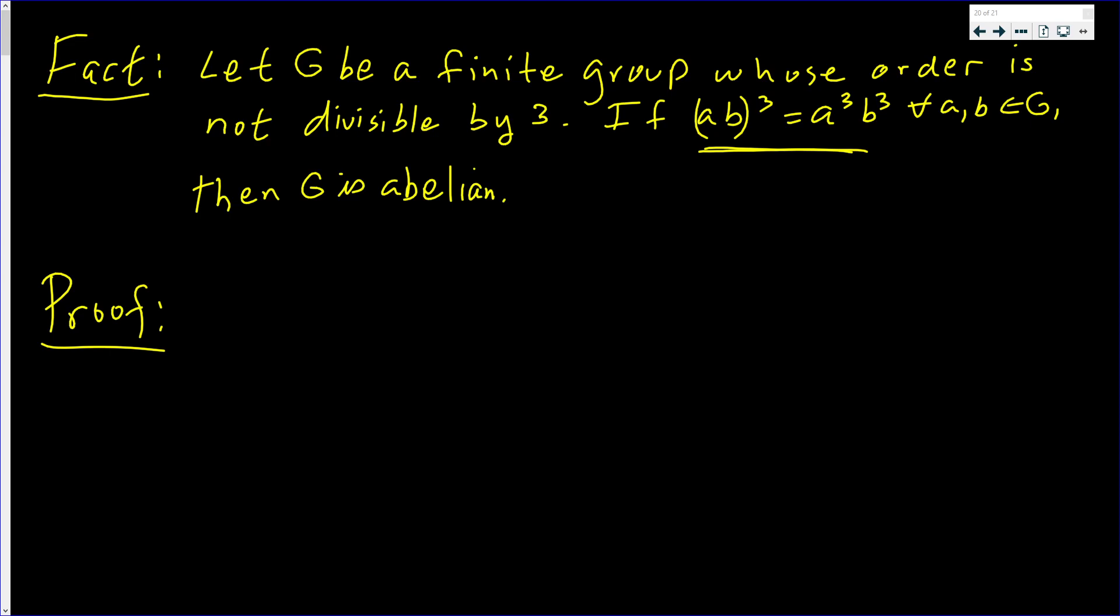How about we get into the proof? So we know that (ab)³ is equal to a³b³. But this here is the same as a(ba)²b, sorry, times b.